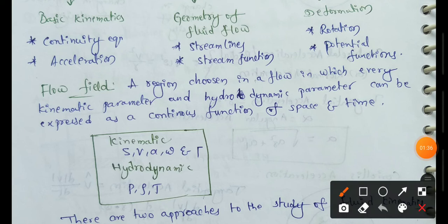Kinematic parameters include velocity, acceleration, and circulation. Hydrodynamic parameters are also considered in fluid flow analysis.